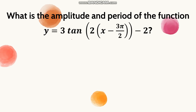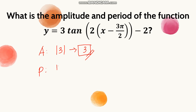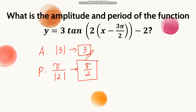Another example: for a function where a is 3 and b is 2, the amplitude is the absolute value of 3, which equals 3. For the period, it's pi over the absolute value of 2, which gives pi over 2. So for both tangent and cotangent, you use the absolute value of a for amplitude and pi over the absolute value of b for the period.